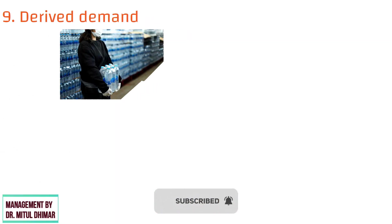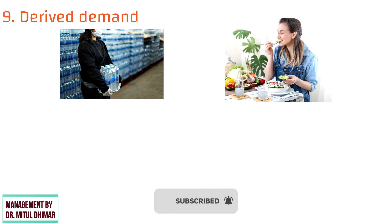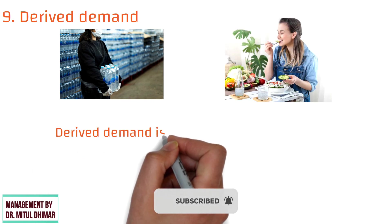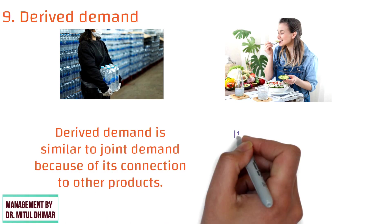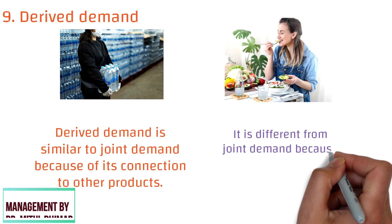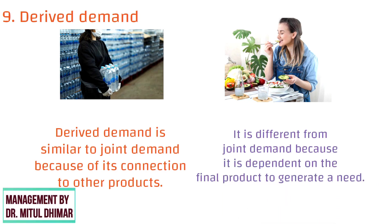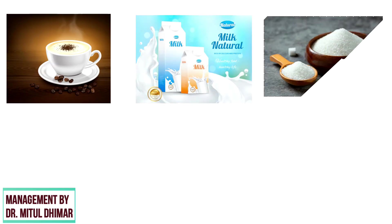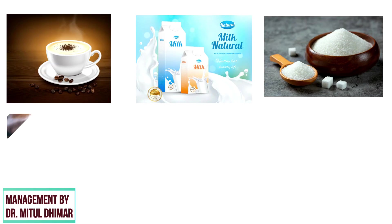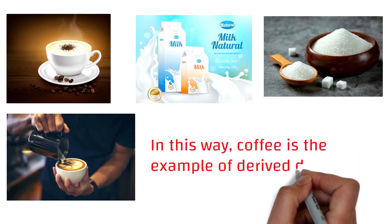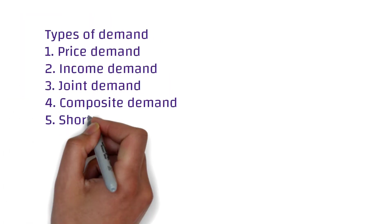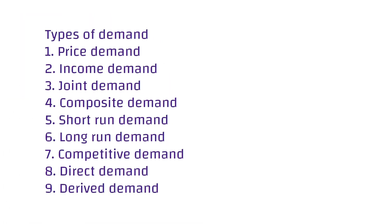Number 9: Derived Demand. Derived Demand is a demand for a product that comes from the usage of others. It is similar to joint demand because of its connection to other products, but different because it is dependent on a final product to generate a need. For example, when you buy coffee, you need to buy milk as well as sugar along with it; otherwise you cannot consume coffee. In this way, coffee is an example of derived demand. These are the total types of demand included in this video. Thanks for watching.